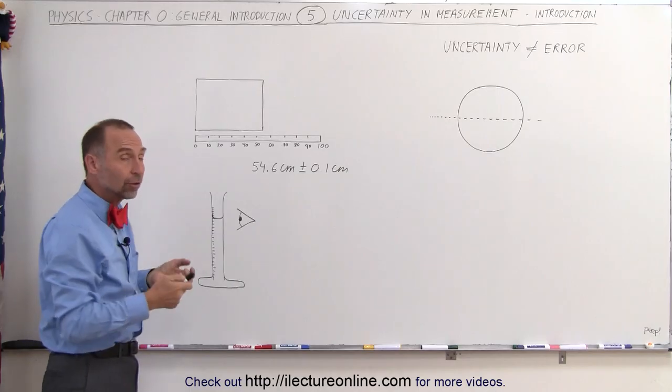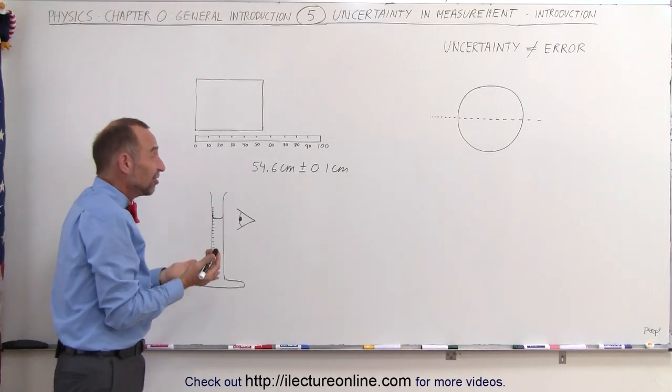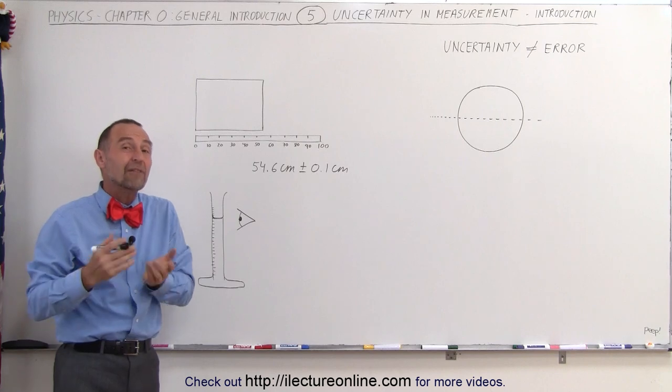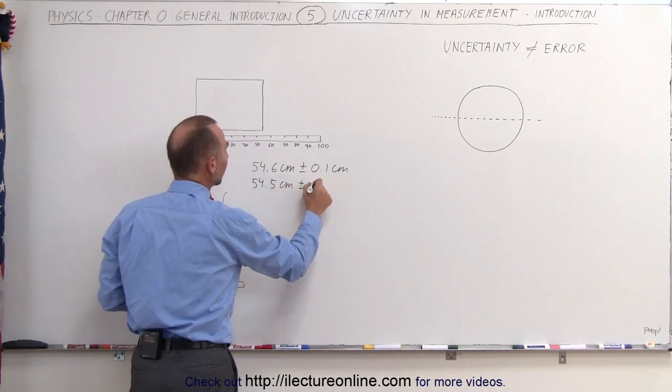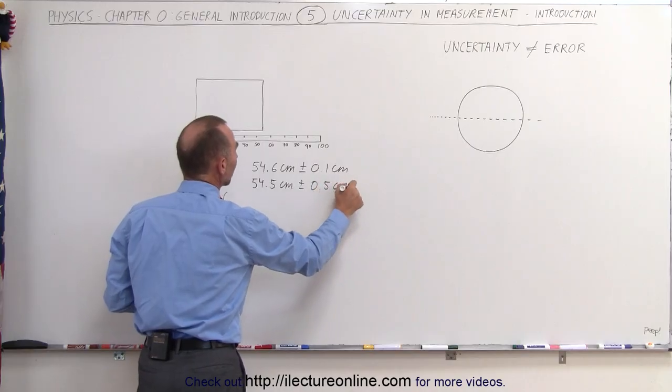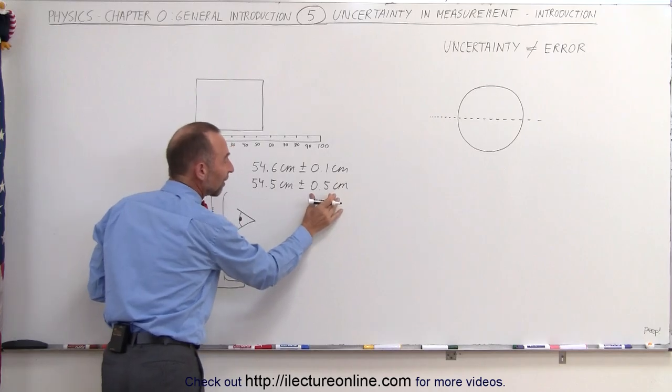So it could be, under the correct circumstances, that the best you can do is maybe to the nearest half a centimeter, and so therefore what you would write is you say, well, it's 54.5 centimeters plus and minus 0.5 centimeters.